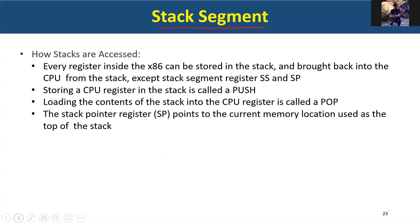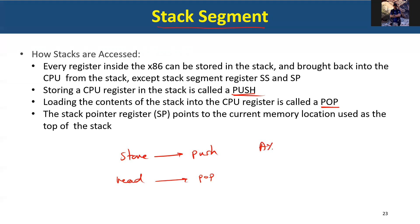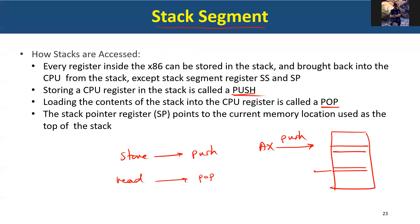So how do we access the stack segment? We use two operations called PUSH and POP. If you want to store in the stack, use PUSH — you push something into the stack. If you want to read from the stack, you use POP. For example, if you have register AX and want to store it, you use PUSH. If you want to read some location into BX, you use POP BX. The SP points to the current memory location used — it's called the top of the stack.